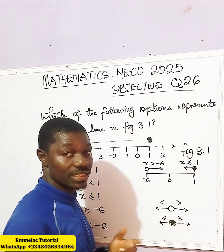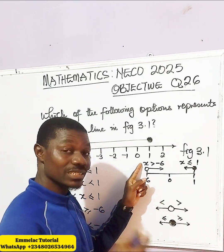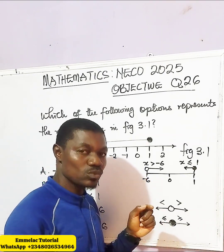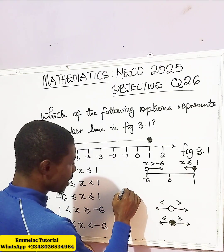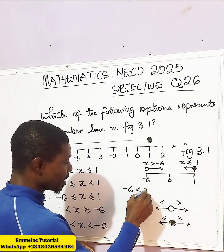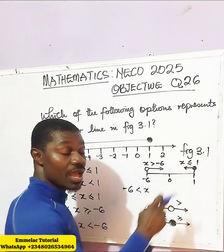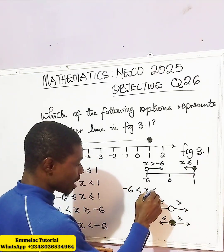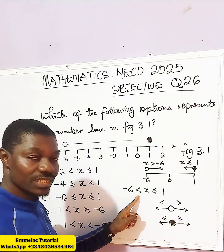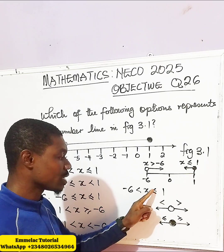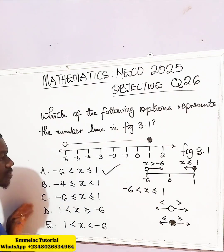Now since x is greater than negative 6, it means that negative 6 will be less than x. So we can represent that as negative 6 less than x. And since x is less than or equals to 1, we have: negative 6 is less than x, and x is also less than or equals to 1. So from the options here, option A is the right answer.